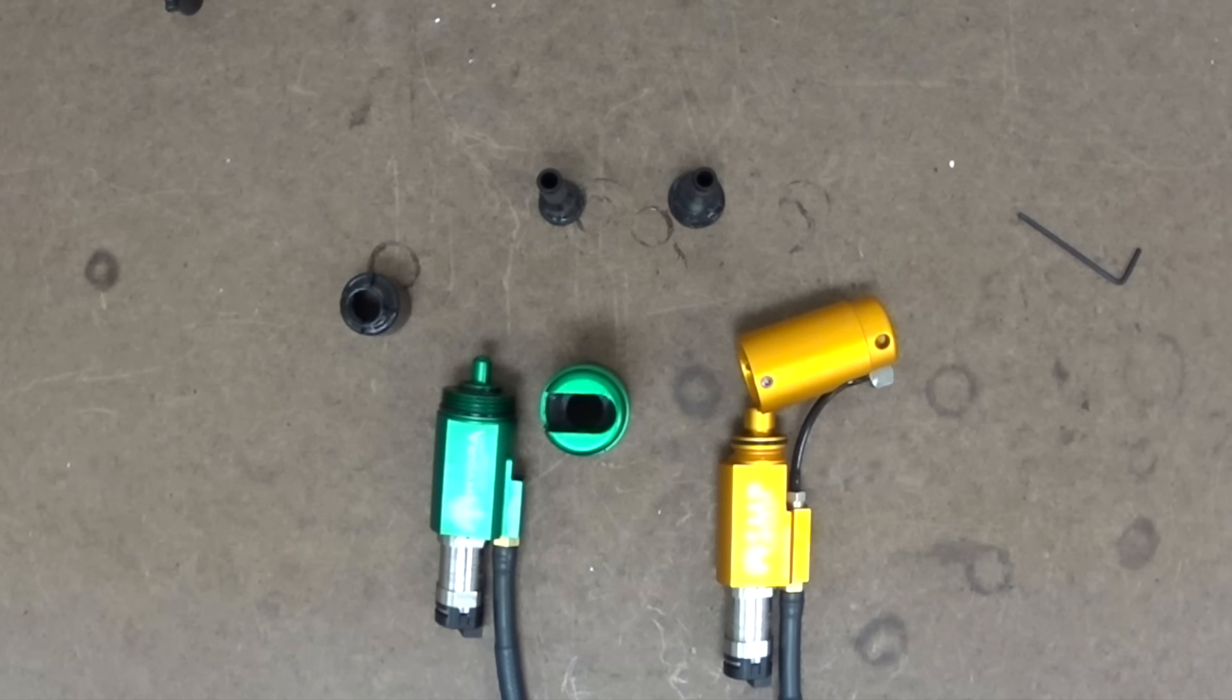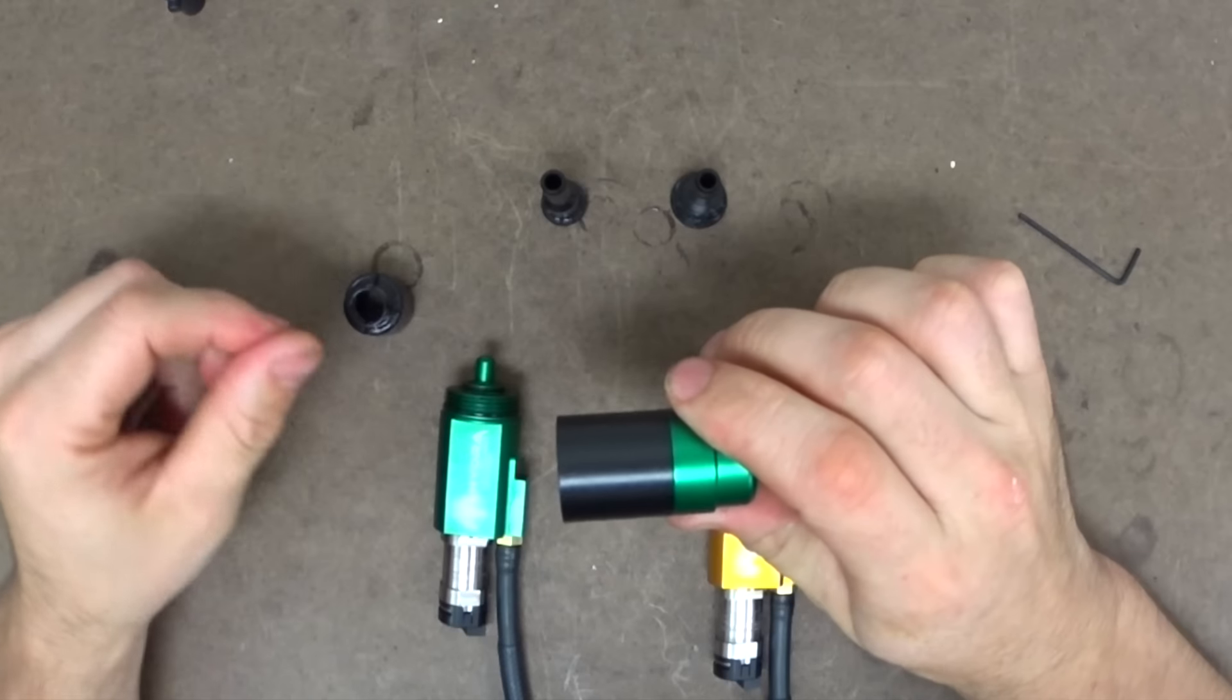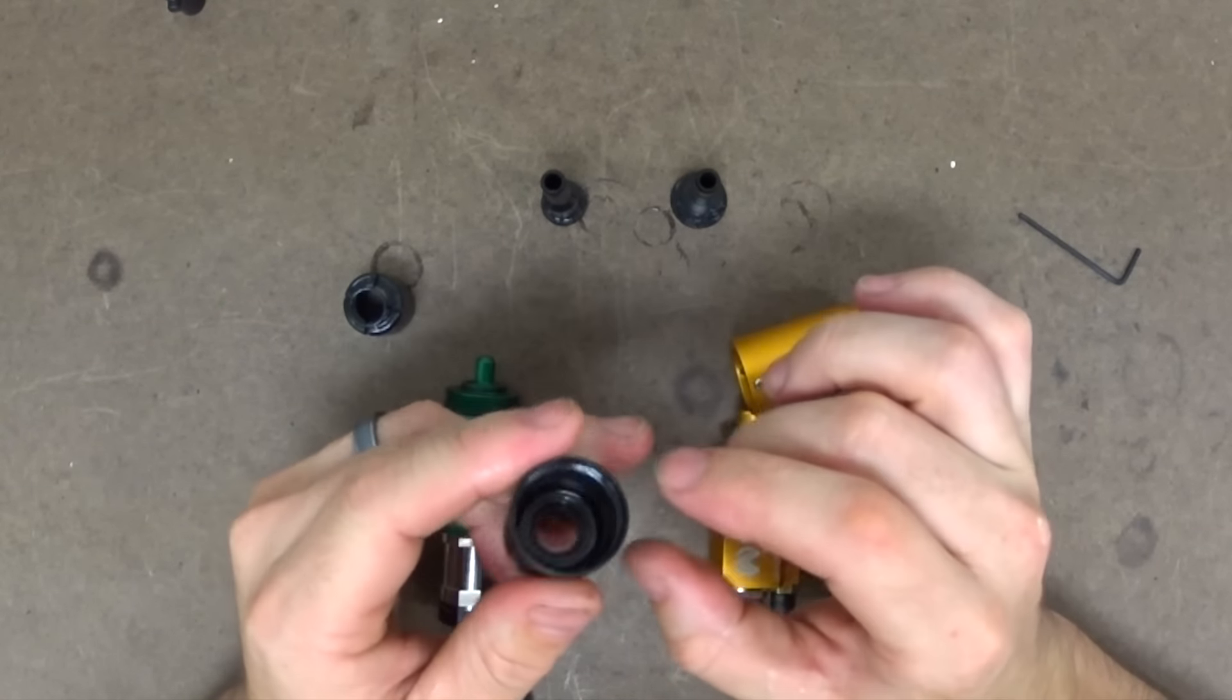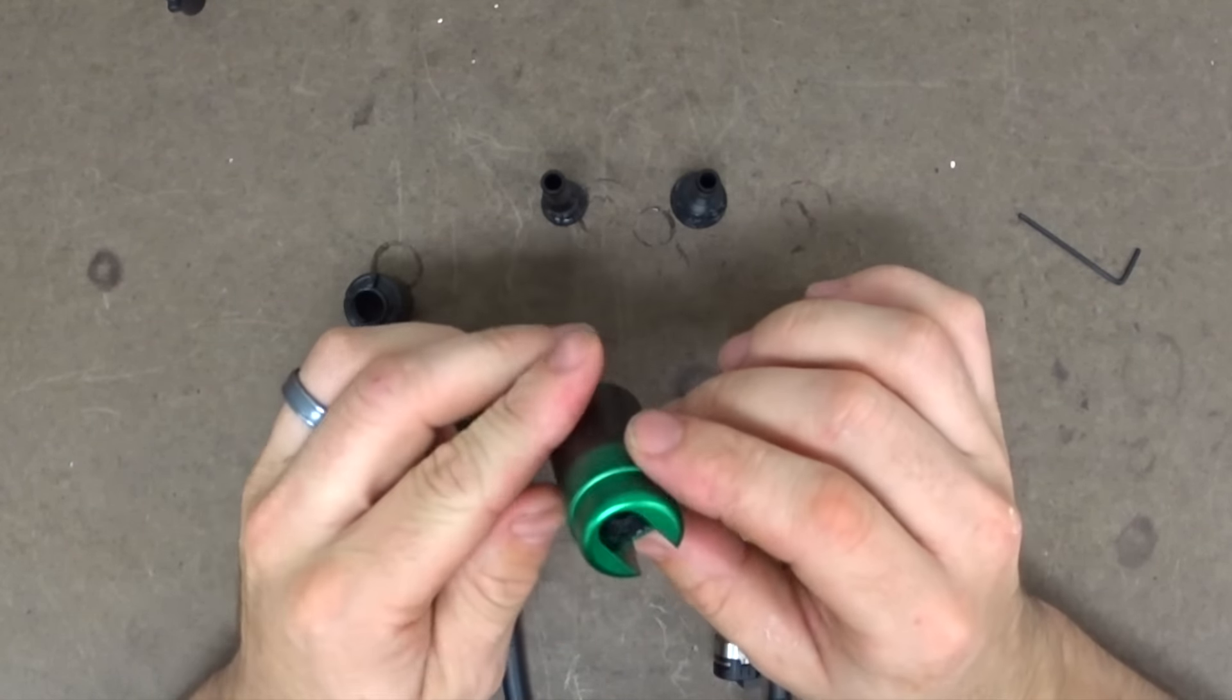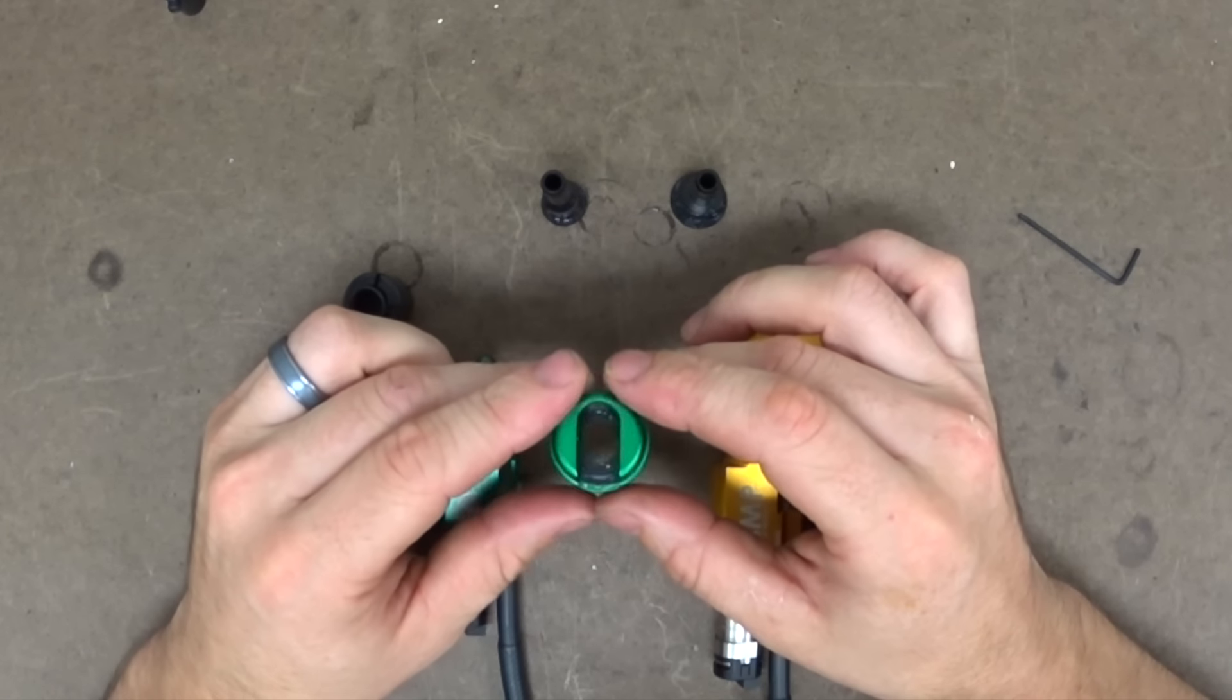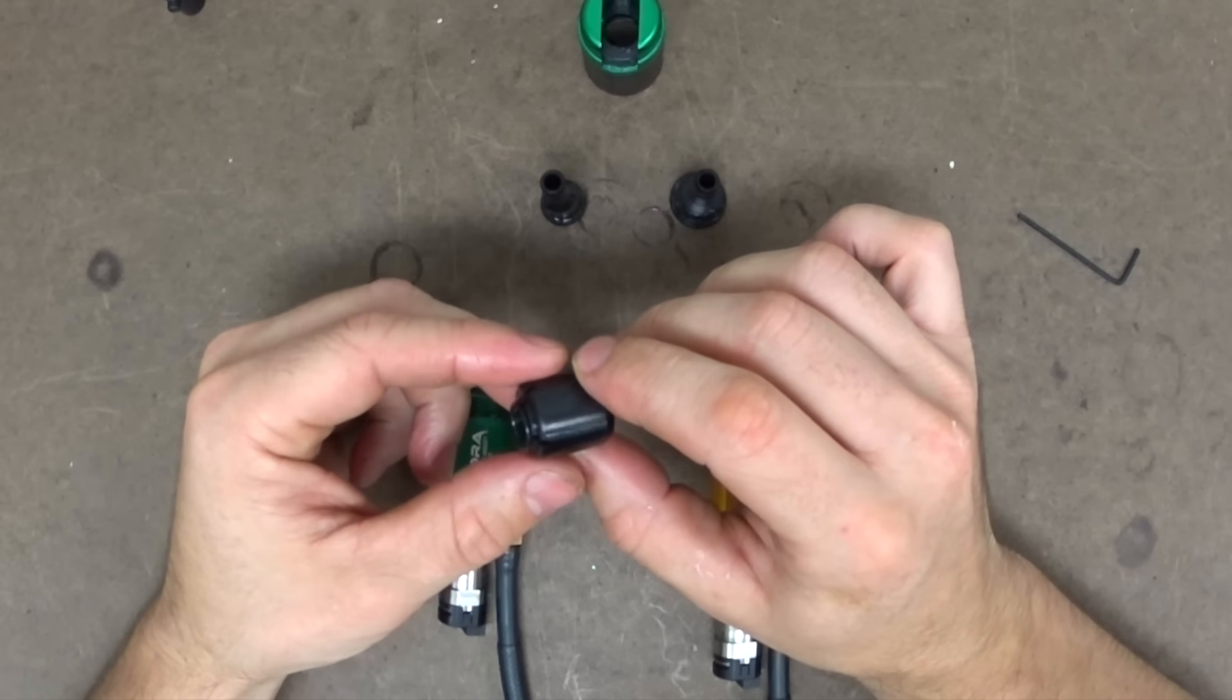One other thing you're going to notice about Hydra is that this middle section is Delrin. That's not aluminum. That's actually Delrin. Delrin is an engineering polymer. It's very low friction. It's very temperature stable. And it's extremely wear resistant. The baffle is also Delrin.